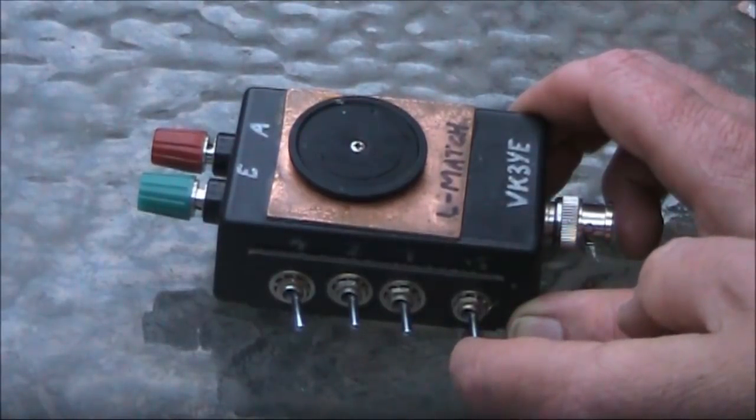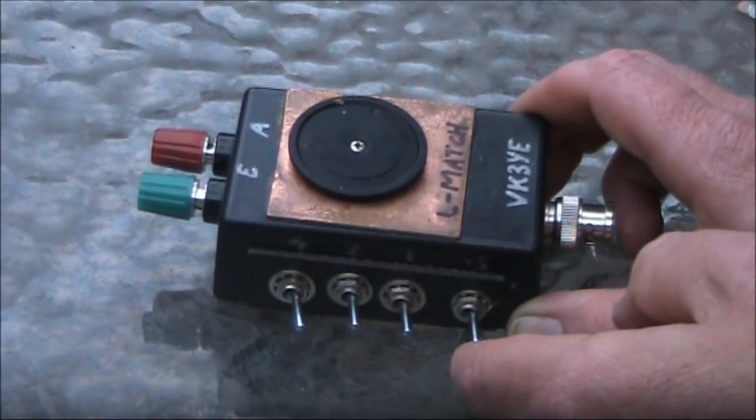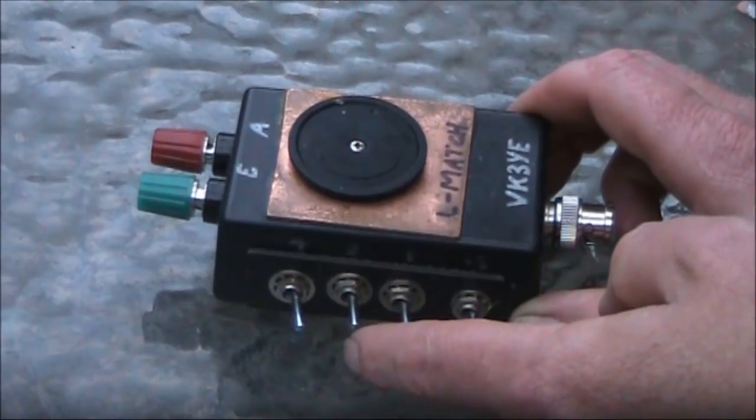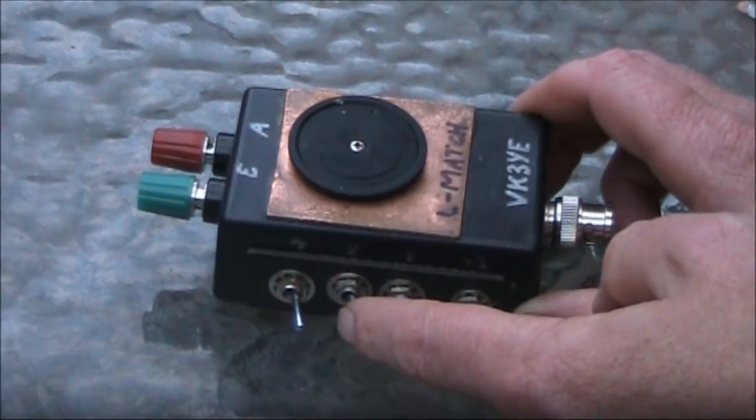The only problem with this coupler is it doesn't do 80 metres. That's particularly a concern as we head towards the low sunspot part of the cycle.